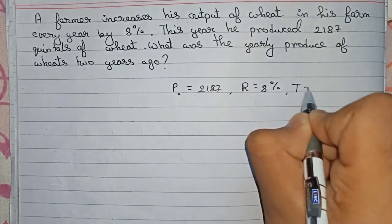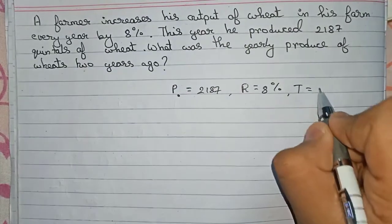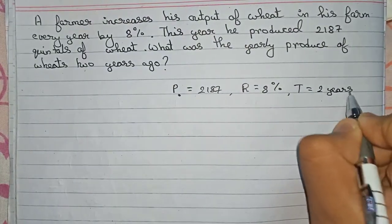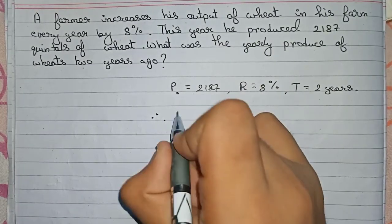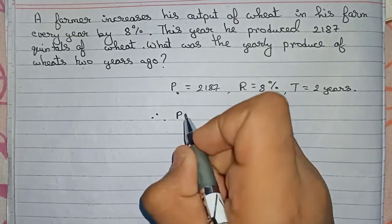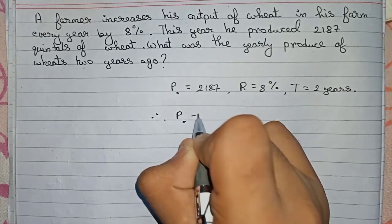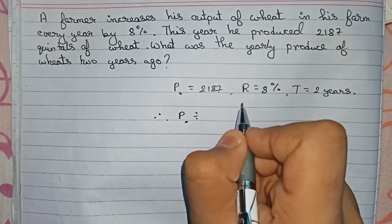And time is we have to find out for two years. So therefore, we write a formula like this: P₀ divided by... So here we have to divide as it is two years ago and not after two years. So we do division, and now as usual...